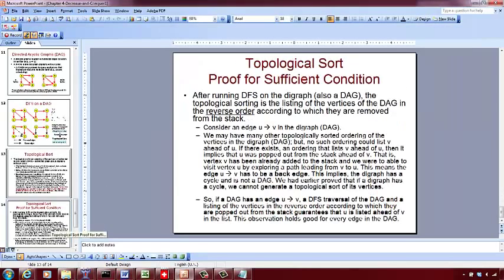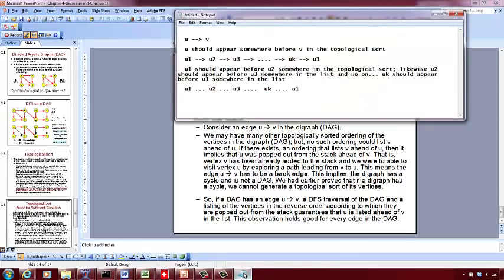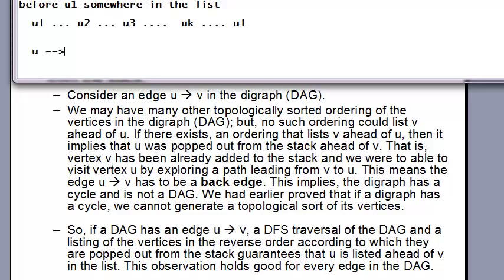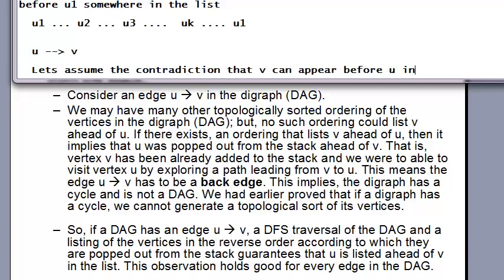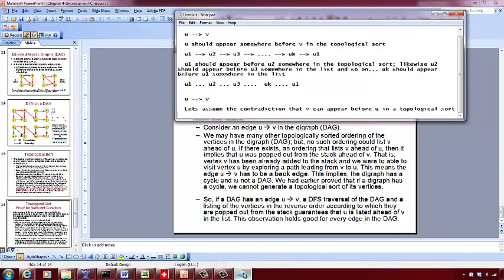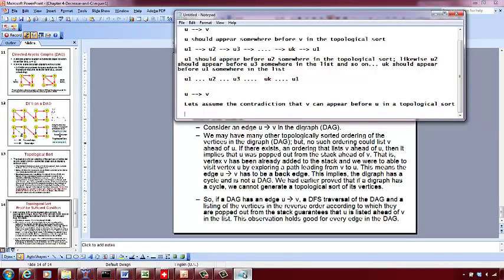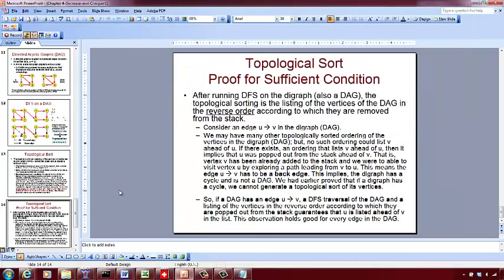Now let us look at the proof for the sufficient condition: it is sufficient for a directed graph to be a DAG in order to write a topological sort. Consider an edge U to V. By definition, U should appear before V in the topological sort. Let us assume the contradiction — that V can appear before U in a topological sort.